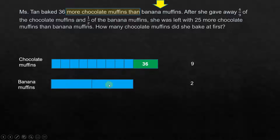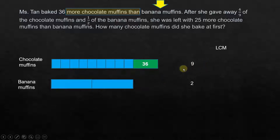Now we have one small issue: the unit size for the chocolate muffins divided into 9 and the unit size for the banana muffins divided into 2 are very different, making it hard to relate them. Fortunately, the whole sizes are equal. If we can divide both into the same number of units, their unit sizes would be the same. That can be achieved by finding the LCM of 9 and 2, which is 18. So we divide both into 18 equal units.